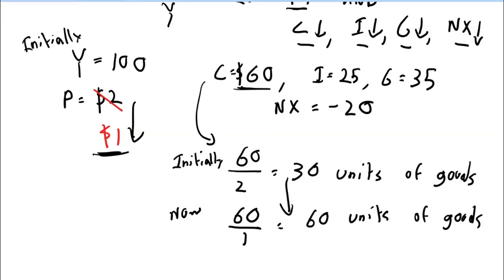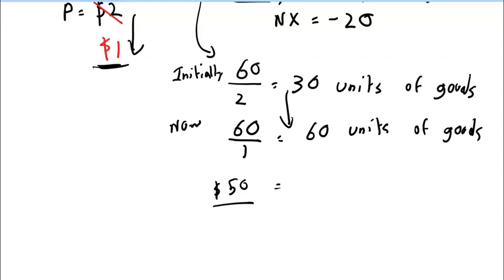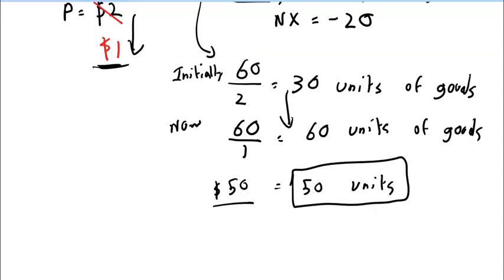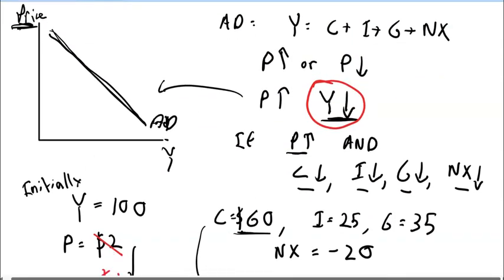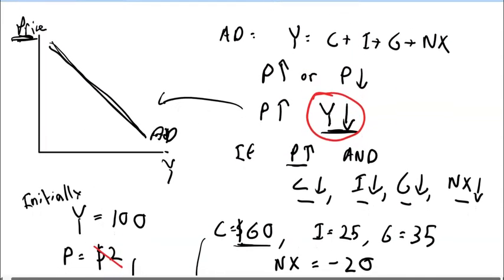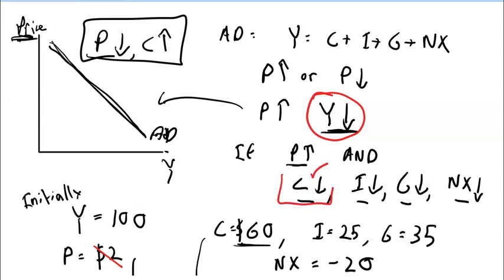I can actually reduce my expenditure, maybe to $50, but I would still consume 50 units. So as price goes down, real consumption increases. This confirms that as price decreases, the consumption component of aggregate demand increases, which supports the downward-sloping aggregate demand curve.